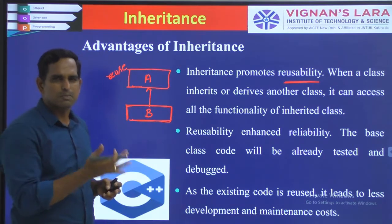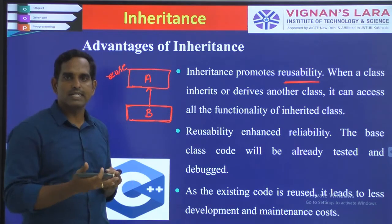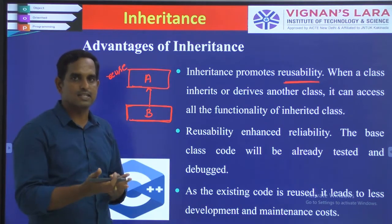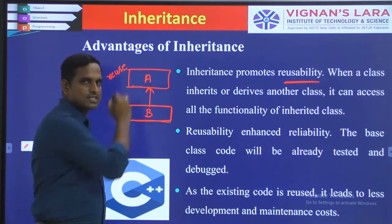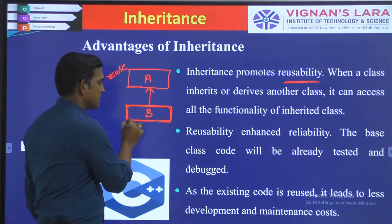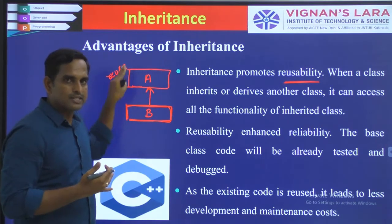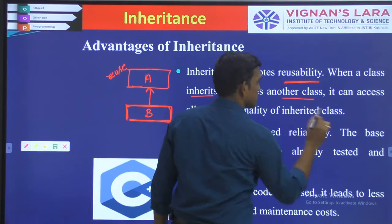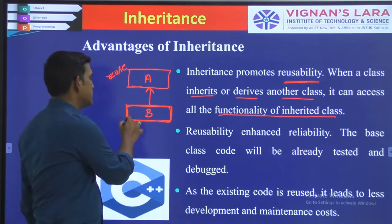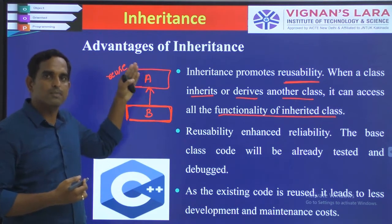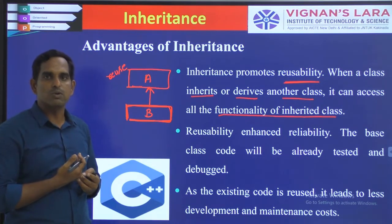In simple programs you might write both classes yourself, but actual inheritance involves that a particular class is already existing in your system and you are trying to reuse it. You are just trying to reuse your existing class in your program. This provides reusability. When a class inherits or derives another class, it can access all the functionality of the inherited class. When B is inheriting class A, it will inherit all the properties and functionalities of A — that is why we call it code reusability.